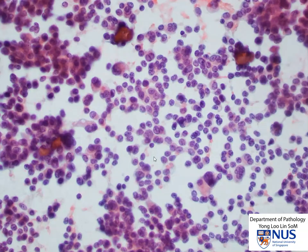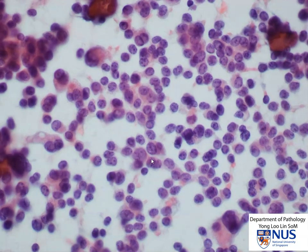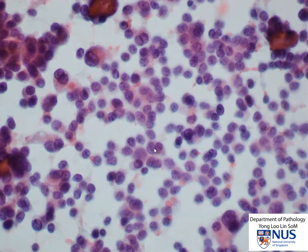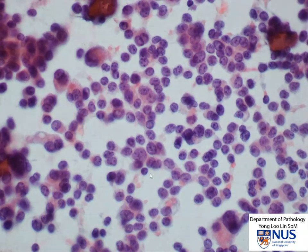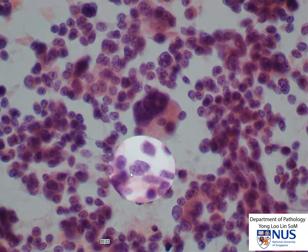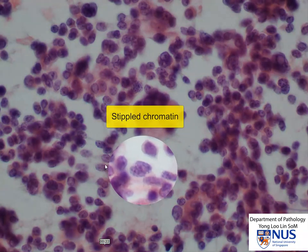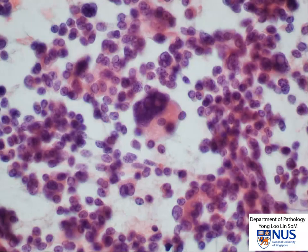We begin to appreciate the chromatin more at higher magnification. It is quite uniformly dispersed and granular. In this field, there are some large, giant, multinucleated cells. Here is a good example of a cell where you can see that the chromatin is quite stippled, perhaps having a salt and pepper appearance.